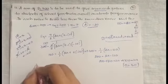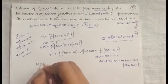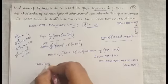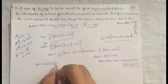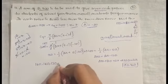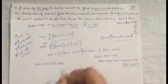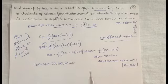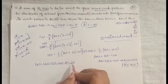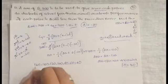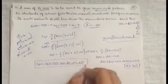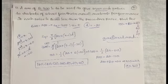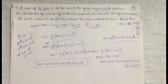After getting a = 160, the seven prizes are: 160, 140, 120, 100, 80, 60, 40. Each prize is 20 less than the previous one. This is a very easy problem and I hope you are clear about it.